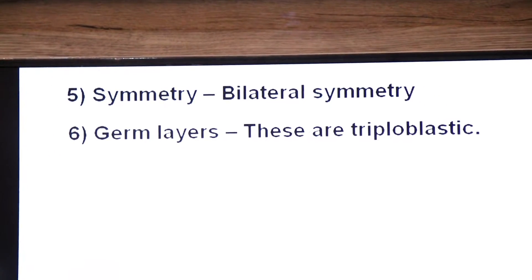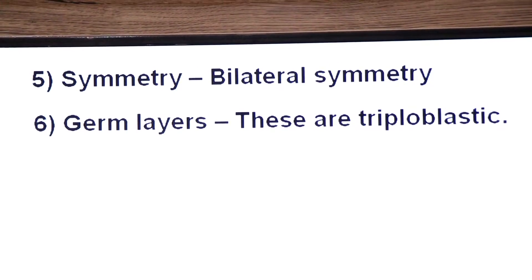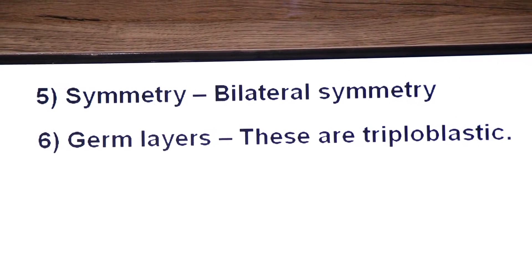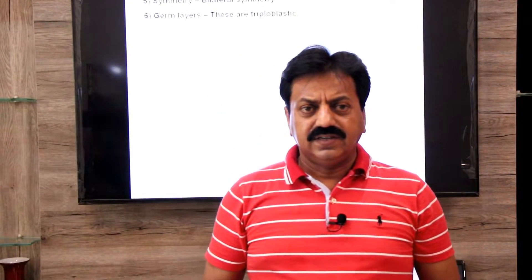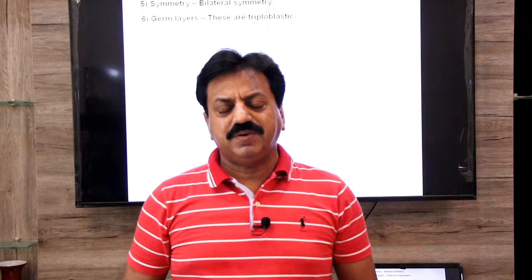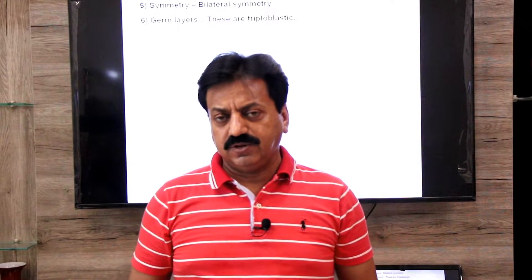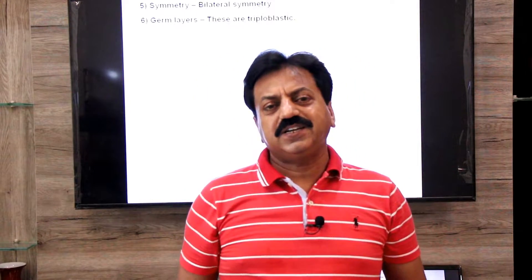Germ layers: these are triploblastic animals, meaning they have three primary germ layers — ectoderm, endoderm, and mesoderm. During their embryogenesis, during the formation of the embryo, three layers develop: the outer ectoderm, the middle mesoderm, and the inner endoderm.